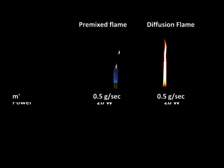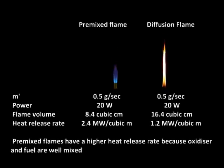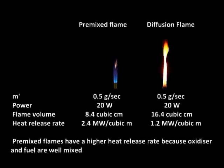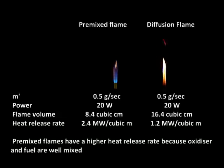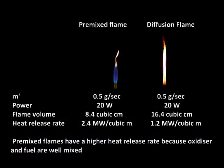At the same power level, the premixed flame volume is about half of a diffusion flame, and hence the heat release rate of a premixed flame is higher accordingly. Premixed flames have a higher heat release rate because fuel and oxidizer are initially well mixed.